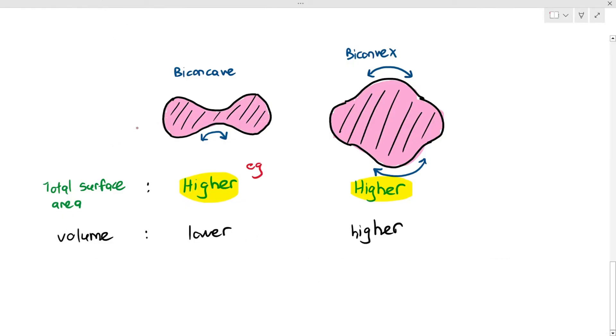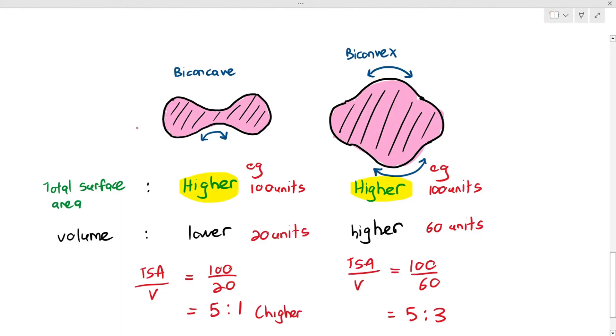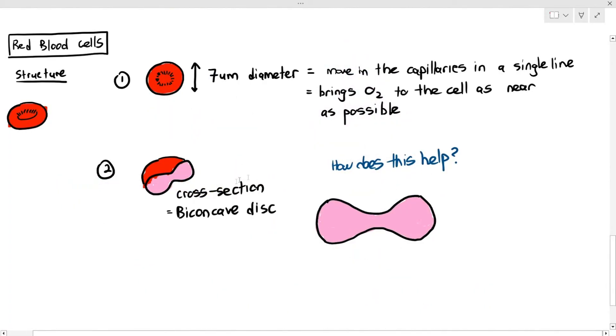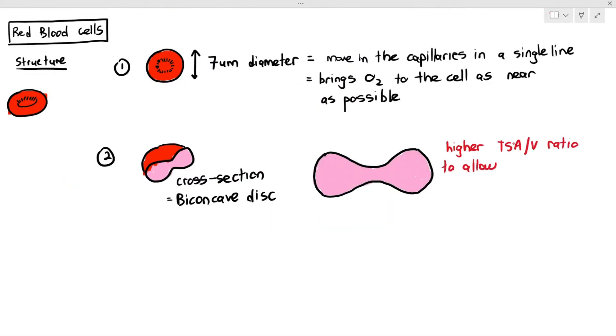As an example, if we both assume that the surface area of both cells are 100 units, and if we also assume that the volume of the biconcave cell is 20 units, and the volume of the biconvex cell is 60 units, these are all just assumptions, if we were to compare the ratio, for the cell on the left, the ratio is 5 to 1, but the cell on the right, the ratio is 5 to 3. So what that means is, biconcave cells have a larger total surface area to volume ratio in general, and this is important because it allows easier diffusion of oxygen in and out of the cell. If the cell had too large of a volume, diffusion would have been extremely difficult because the total surface area to volume ratio would have been much smaller, and we don't want that to happen. So the red blood cell solves this problem by having its shape become a biconcave disc.